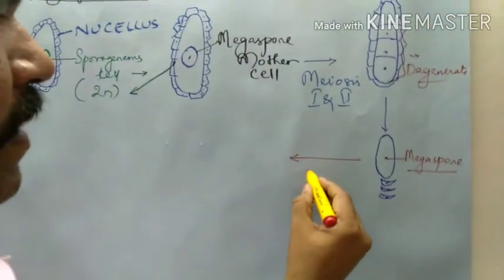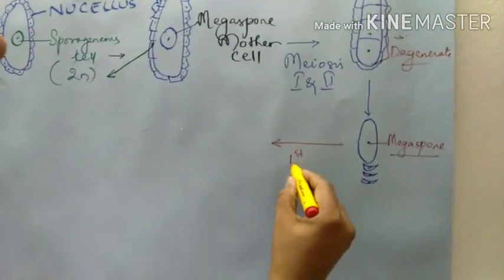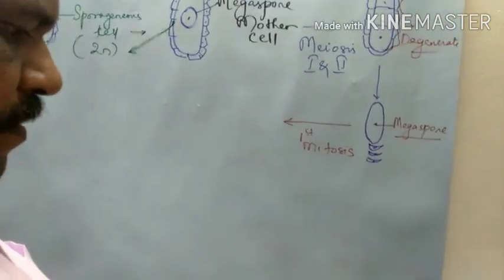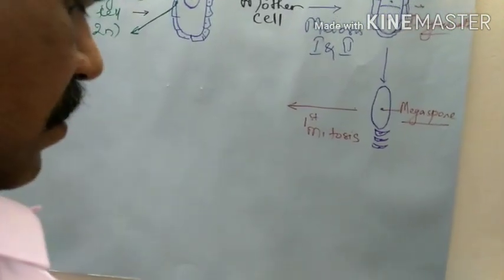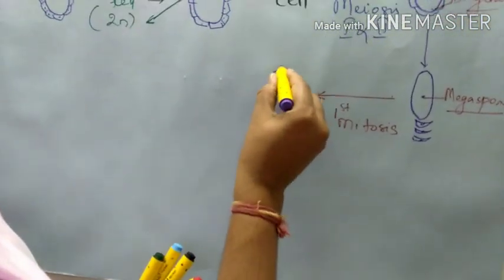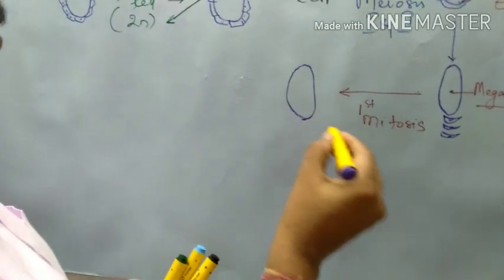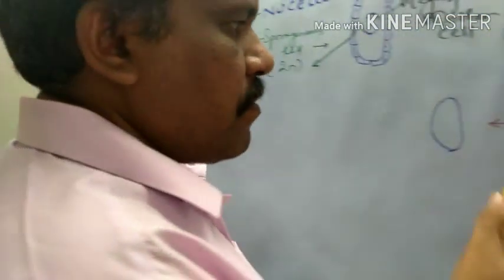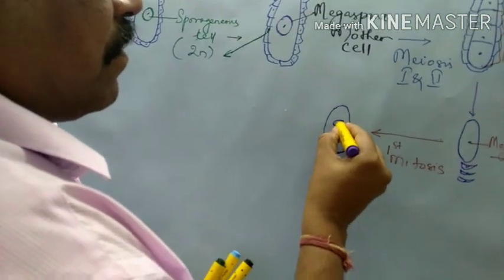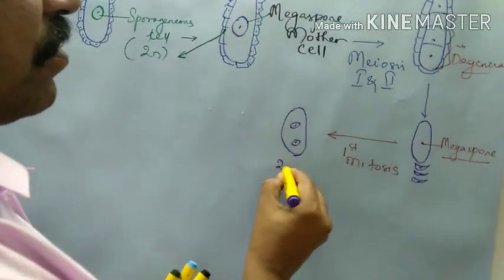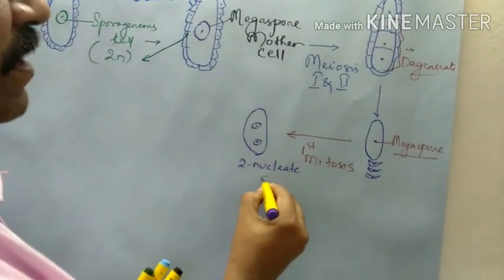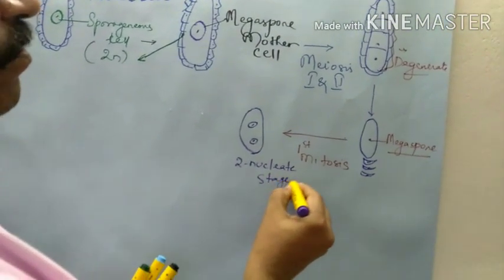First mitosis will unfold. When it unfolds the first mitosis, mitosis means how many? 2 will be formed. So we are mentioning here as 2-nucleate — it is the 2-nucleate stage.